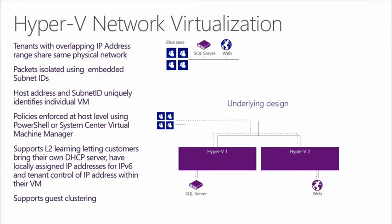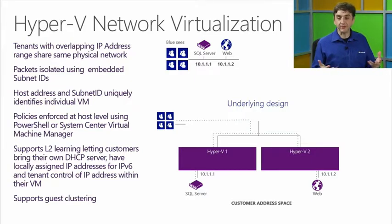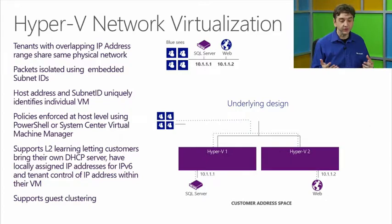Hyper-V network virtualization came about in 2012, but it has really been enhanced in Windows Server 2012 R2. What does this exactly mean and how does VMM and System Center take advantage of it? It starts with a tenant environment. I have this group or company — we'll call it the Blue Company — and they have a SQL Server and a web server. Those servers have particular IP address schema: 10.1.1.1 for the SQL Server and 10.1.1.2 for the web server. That virtual environment is what the virtual machines see. But the physical environment maybe is on a 192.168 network.